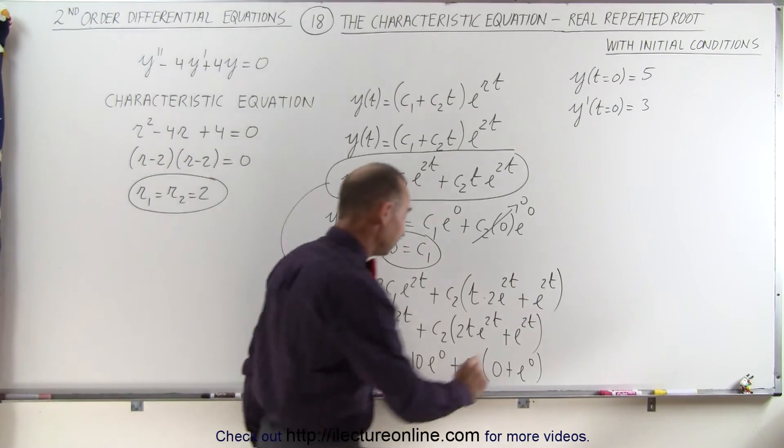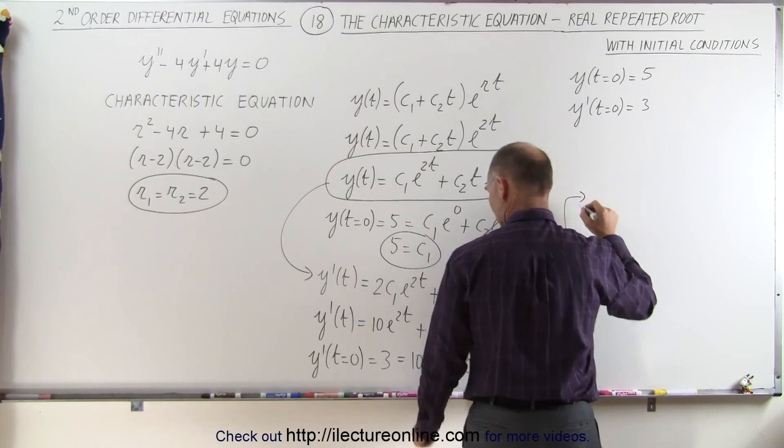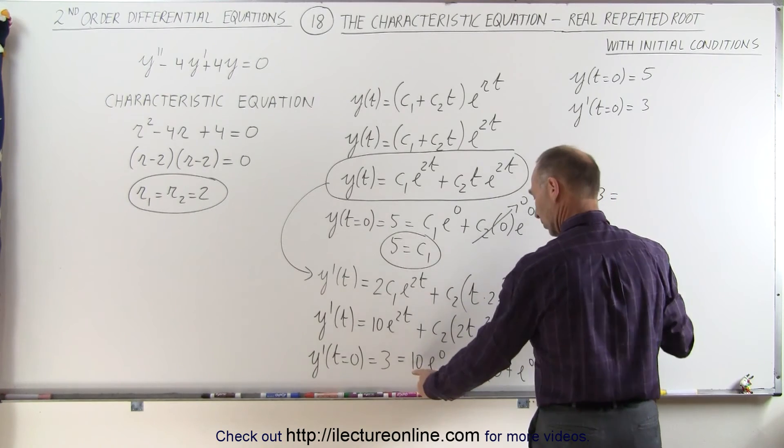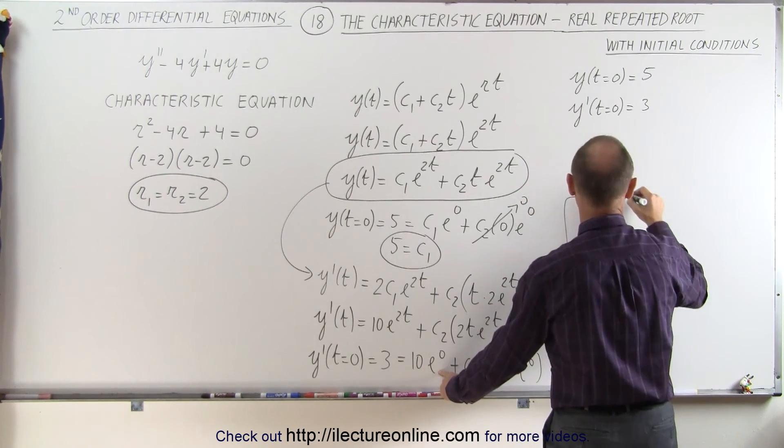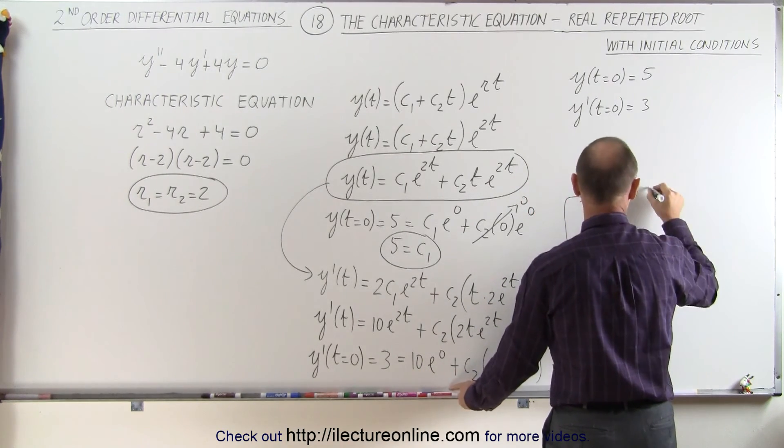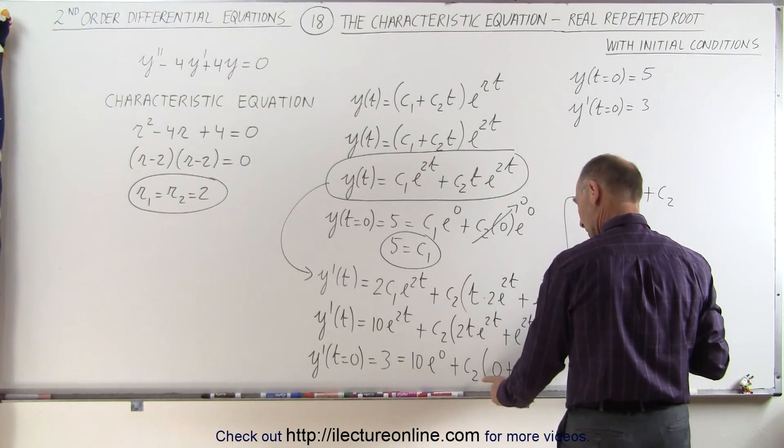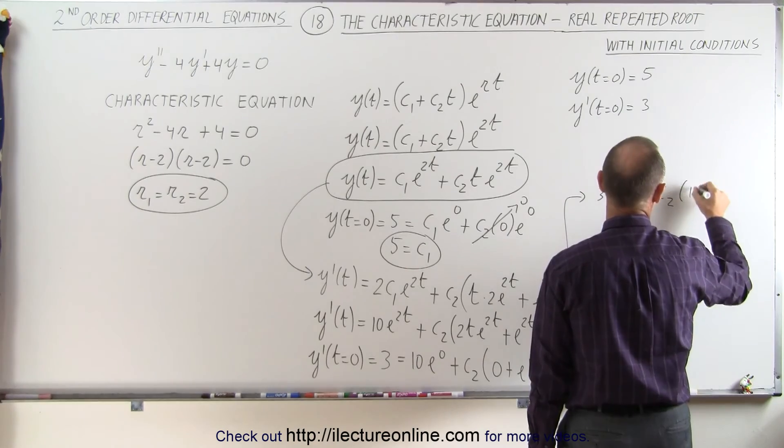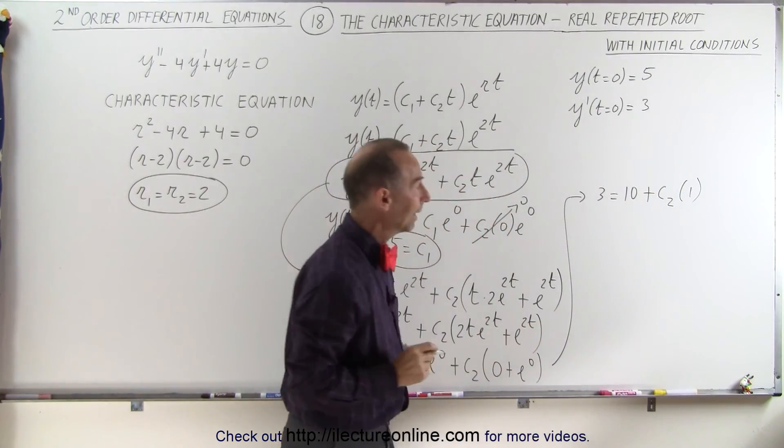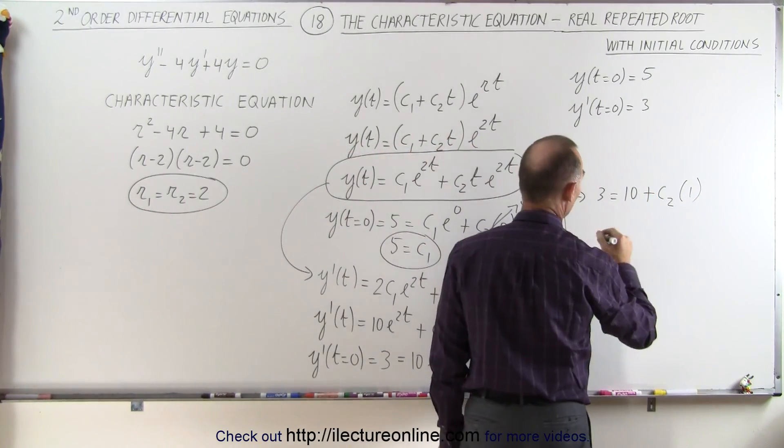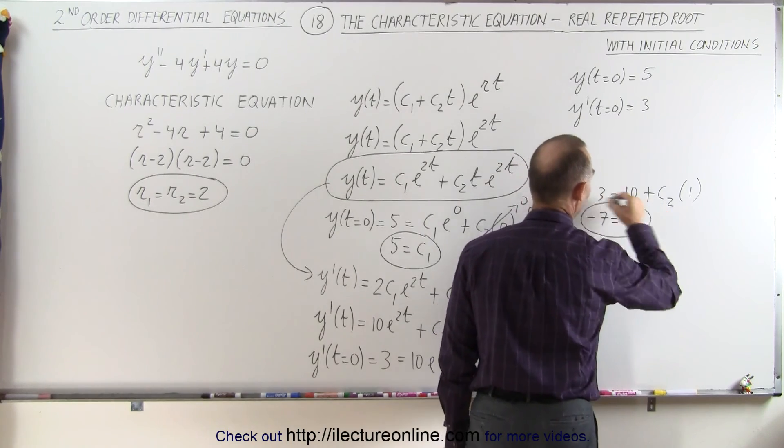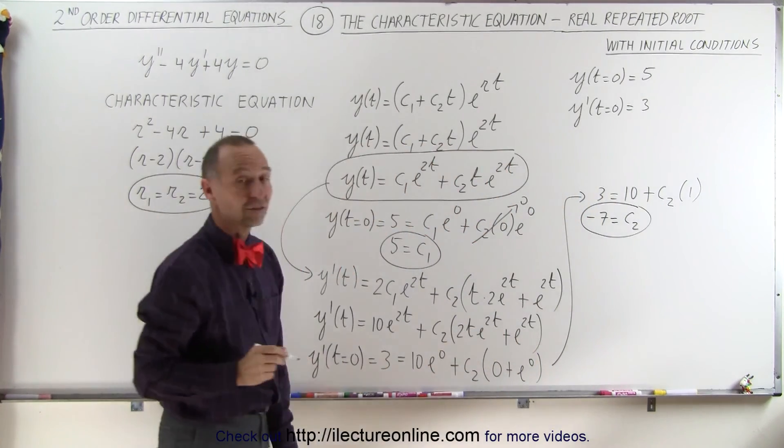Now, simplifying that we get 3 is equal to 10 times e to the 0, which is 1. That means 10 plus c2 times 0 plus 1. So that's c2 times simply 1. And then we can subtract 10 from both sides. So minus 7 equals c2. And there we have the value of our second constant c2.